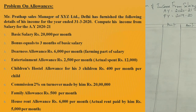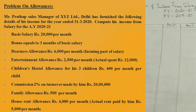Basic salary is Rs. 20,000 per month. Bonus is 3 months of basic salary. DA (Dearness Allowance) is Rs. 6,000 per month and it is forming part of salary. There is also a Rs. 5,000 DMS allowance which is a retirement benefit. Entertainment allowance is Rs. 2,500 per month and actual spend is Rs. 12,000.